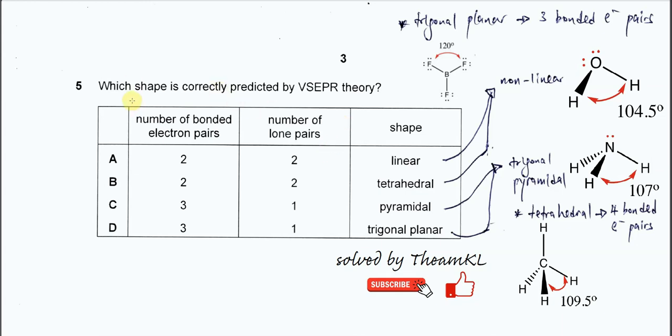Question 5. Which shape is correctly predicted by the VSEPR electron pair repulsion theory? First we need to refer to the table to see what they want. We need to know how many bonding pairs and how many lone pairs are in there.